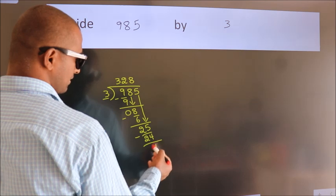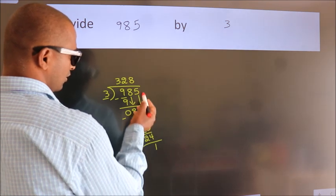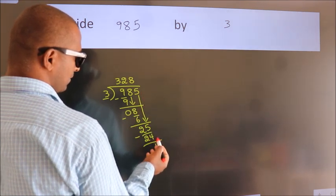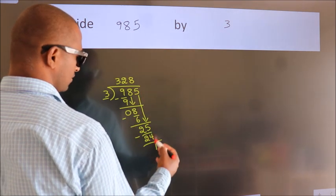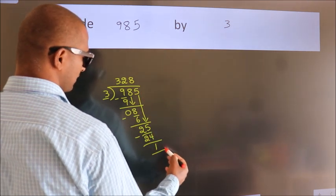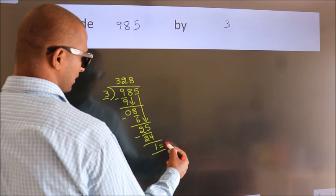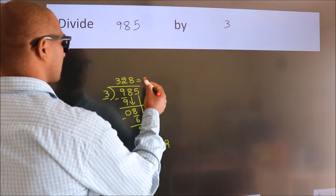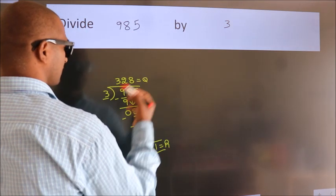After this, there are no more numbers to bring down, so we stop here. This is our remainder. This is our quotient.